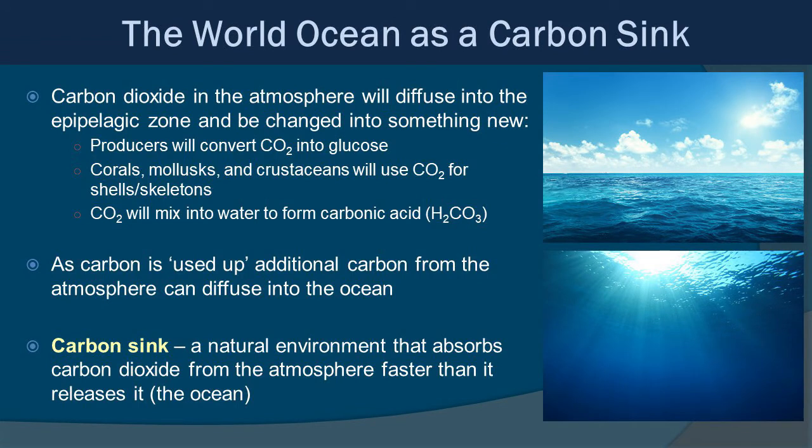The world's oceans function as a carbon sink. Carbon dioxide in the atmosphere diffuses into the epipelagic zone and is converted: producers convert it into glucose, corals and mollusks and crustaceans use CO2 for shells and exoskeletons, and carbon dioxide also mixes into water to form carbonic acid (H2CO3). As carbon is used up, additional carbon from the atmosphere diffuses into the ocean. The carbon sink is a natural environment that absorbs carbon dioxide from the atmosphere faster than it releases it back — that's essentially what the ocean does.